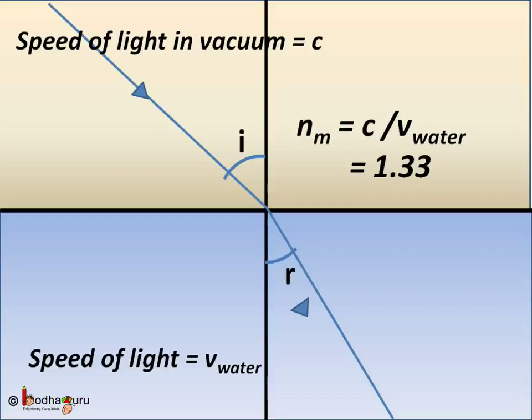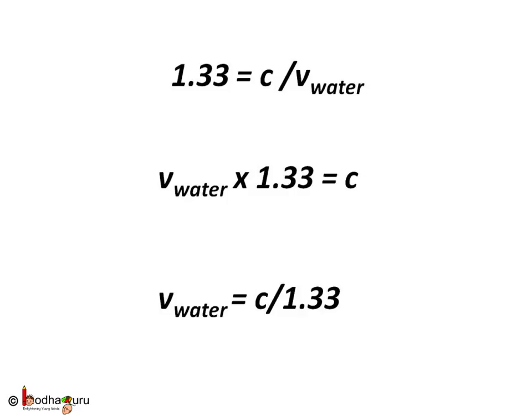For example, the refractive index of water is 1.33. This means speed of light in vacuum divided by speed of light in water is equal to 1.33. In other words, speed of light in water equals speed of light in vacuum divided by 1.33 — that is, light is slowed down by a factor of 1.33 as it enters the water, and this causes refraction.